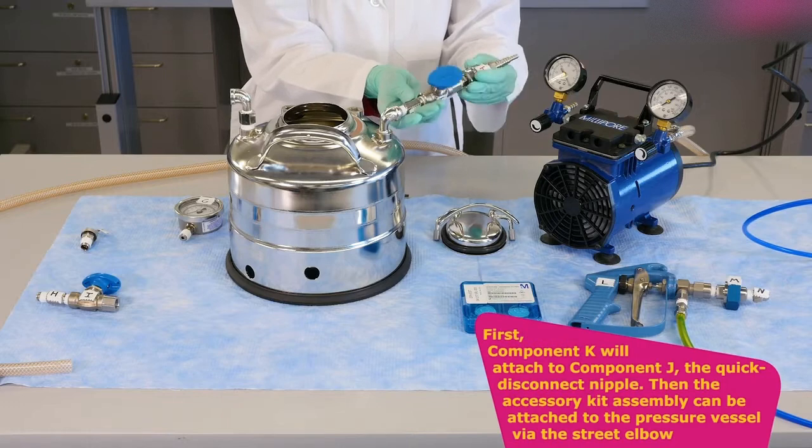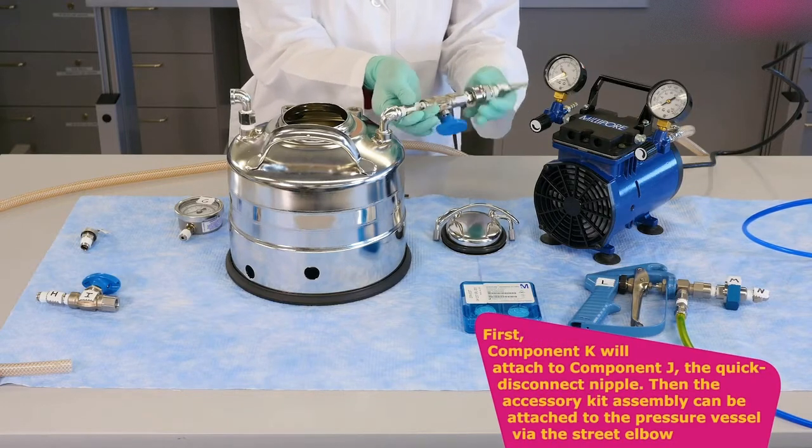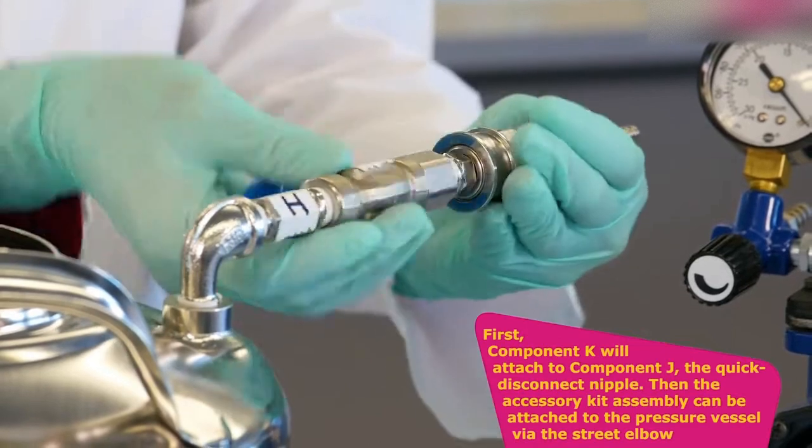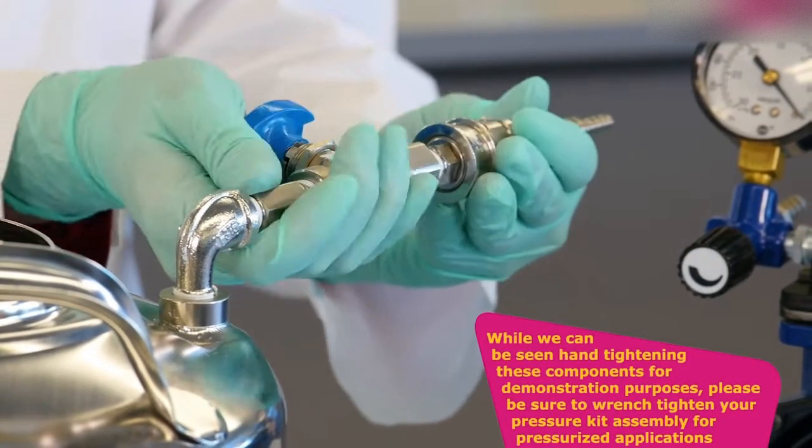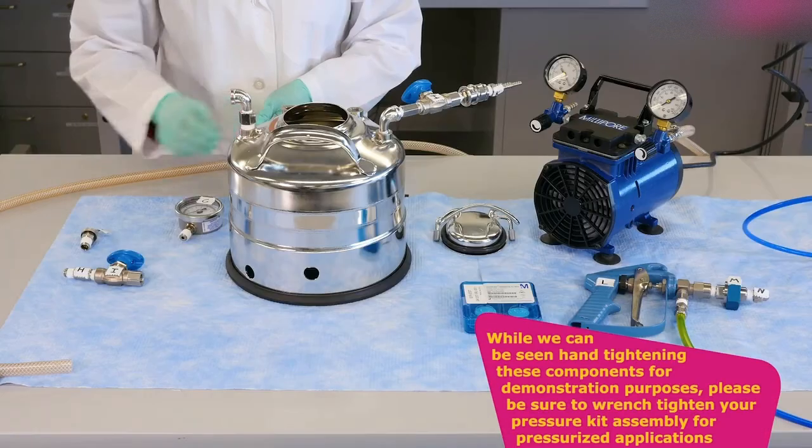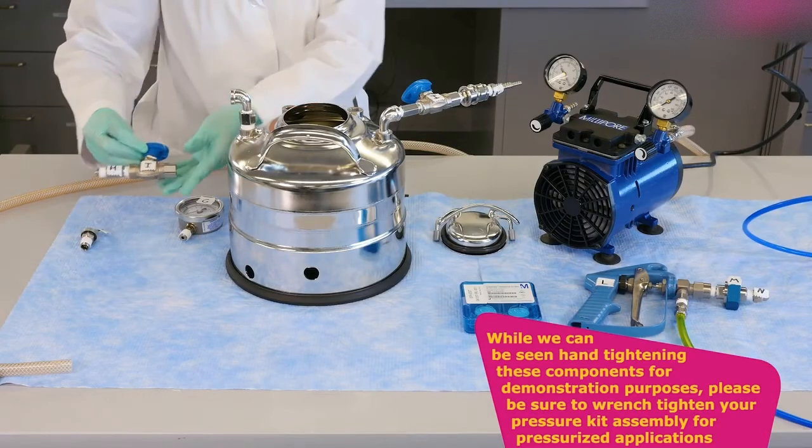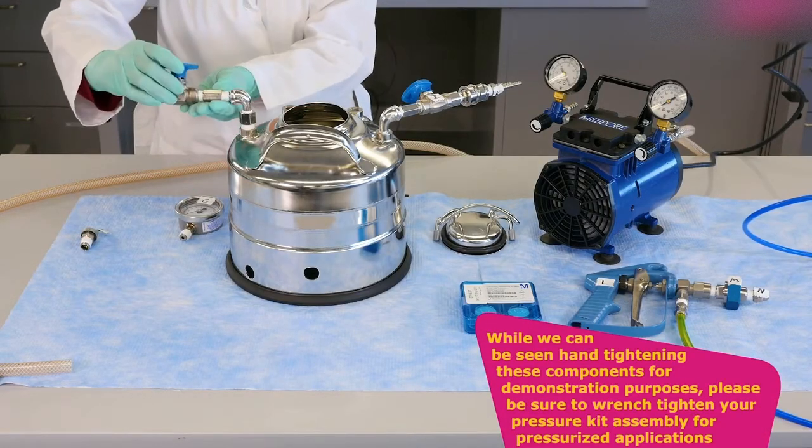First, component K will attach to component J, the quick disconnect nipple. Then the accessory kit assembly can be attached to the pressure vessel via the street elbow. While we can be seen hand tightening these components for demonstration purposes, please be sure to wrench tighten your pressure kit assembly for pressurized applications.